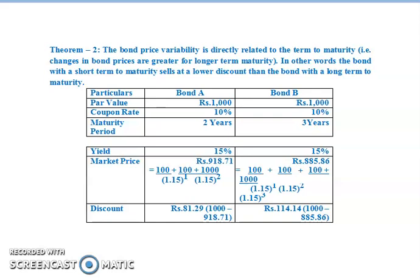Market price we calculate by putting values in the equation. For Bond A: 100/(1.15)^1 + (100+1000)/(1.15)^2, giving us Rs.918.71. For Bond B: 100/(1.15)^1 + 100/(1.15)^2 + (100+1000)/(1.15)^3, giving us Rs.885.86.